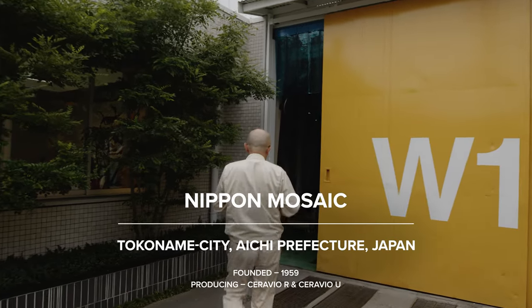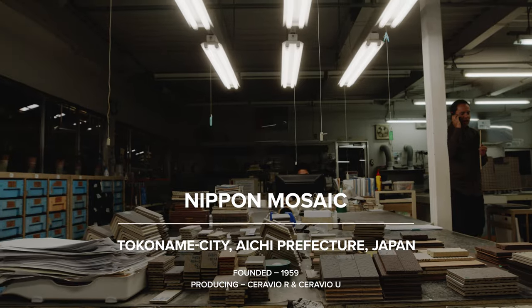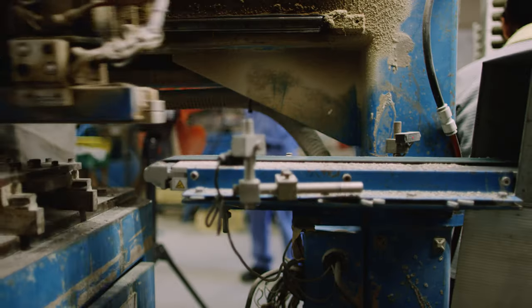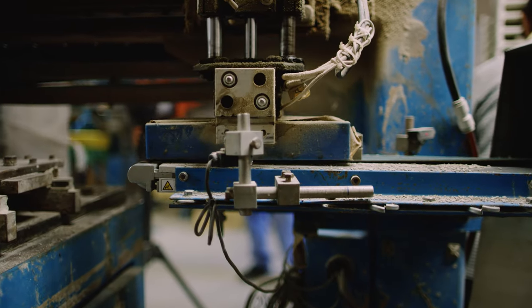So we're here in Tokunami with Inasan at the Nippon Mosaic Factory. This is a very special factory for INAX because it is the only factory in Japan that can make extruded mosaics.